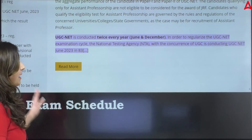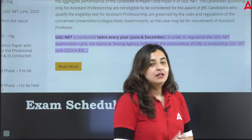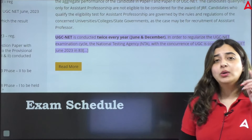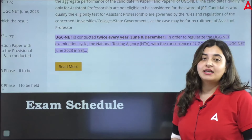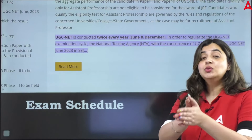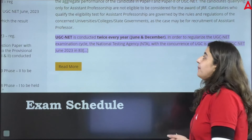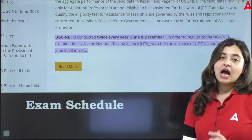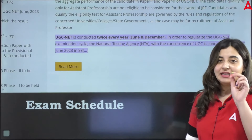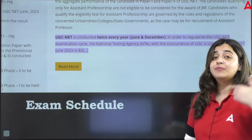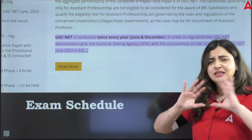Students often ask: how many opportunities do we have to qualify for NET per year? Unlike most other government exams which come only once a year, the UGC-Net exam is conducted twice every year. That means UGC-Net gives you a 6-month period to prepare. The first cycle happens in the month of June and the next cycle in the month of December. So you will have two opportunities to complete your NET, JRF, or PhD dreams. If one attempt is missed or used as a trial, you can prepare better for the next attempt.